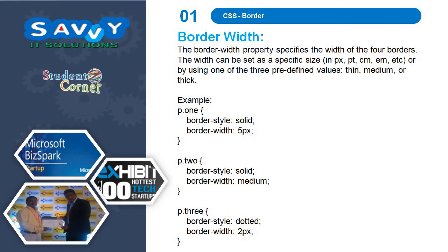Next, border width. The border width property specifies the width of the four borders. The width can be set as a specific size in pixels, pt, cm, or em — we already discussed pixels, point, cm and em. Or by using one of the predefined values: thin, medium and thick.